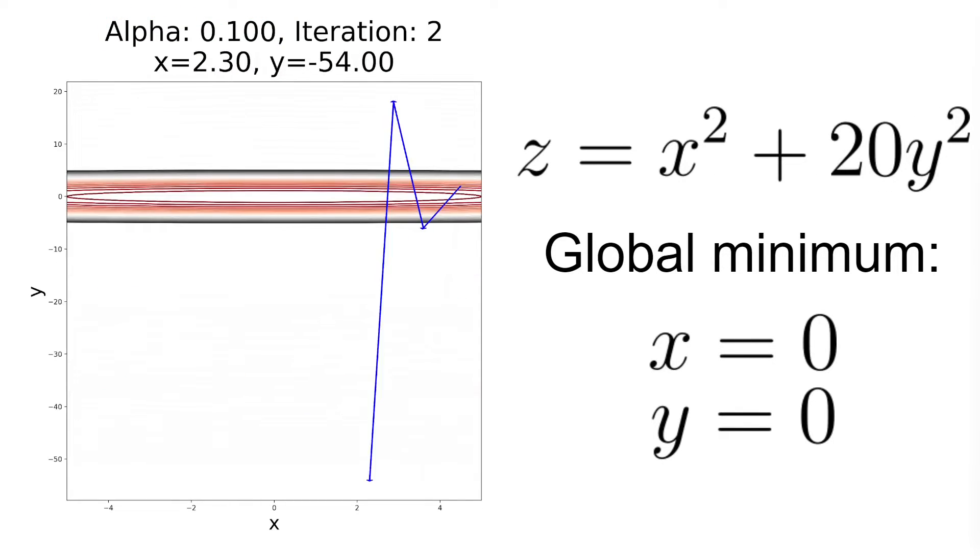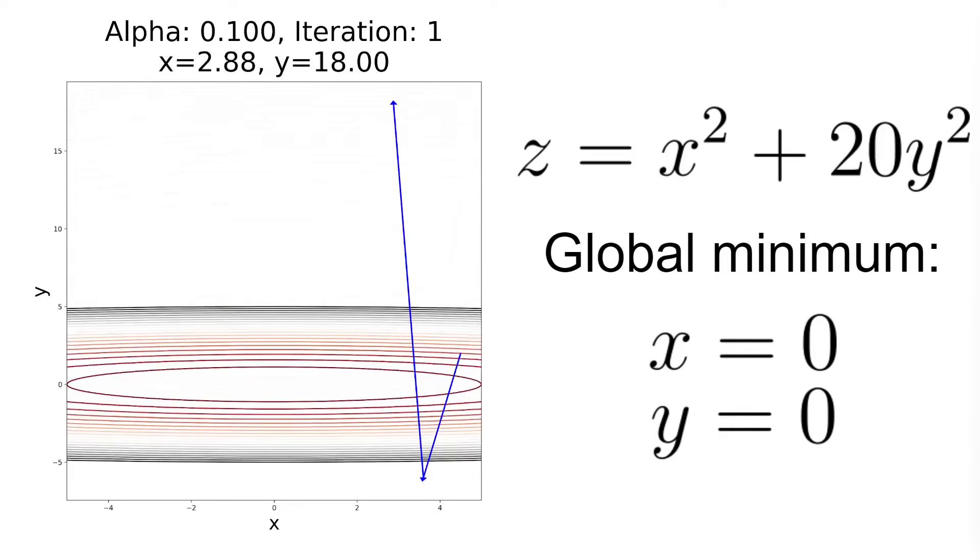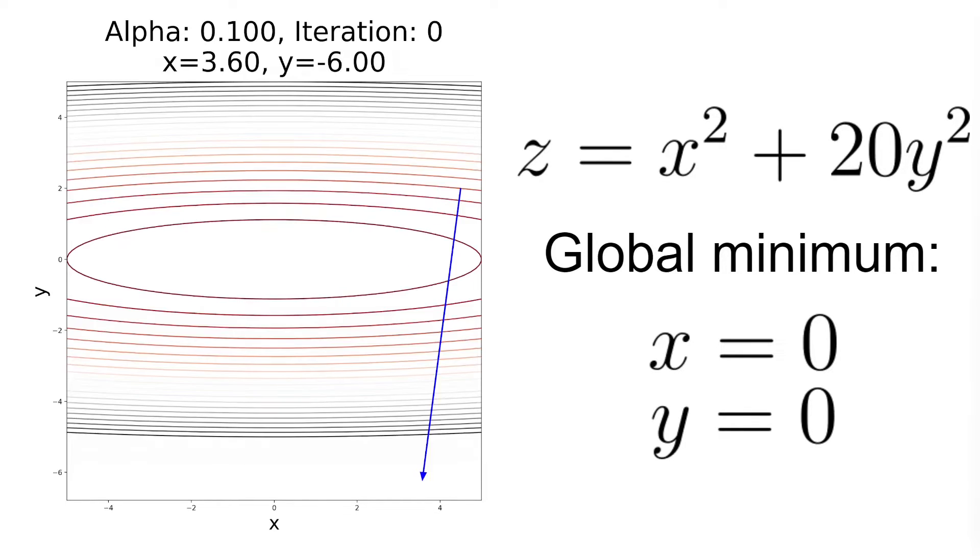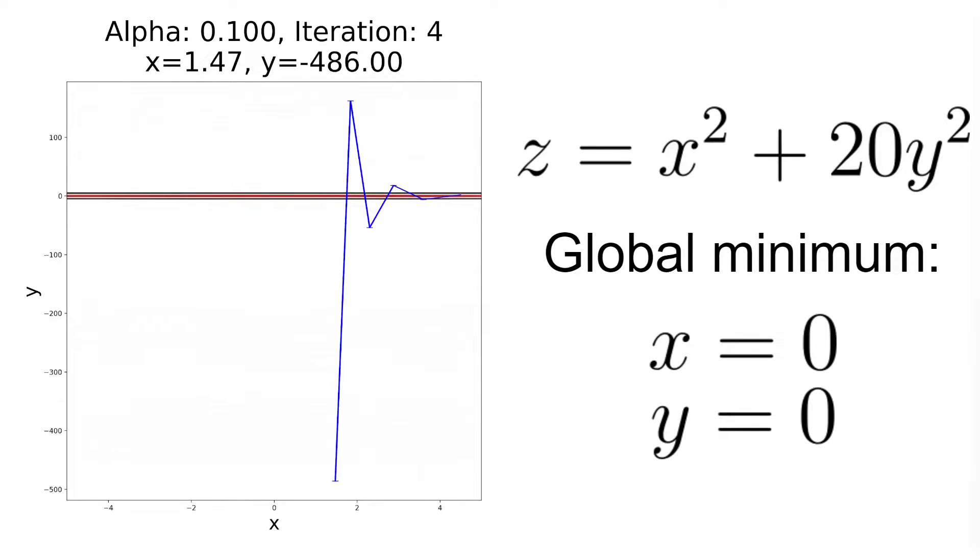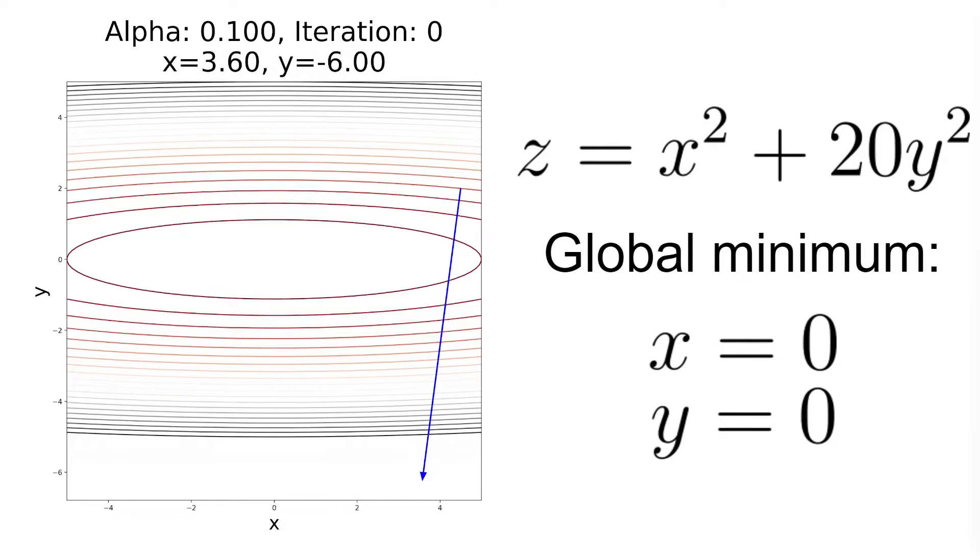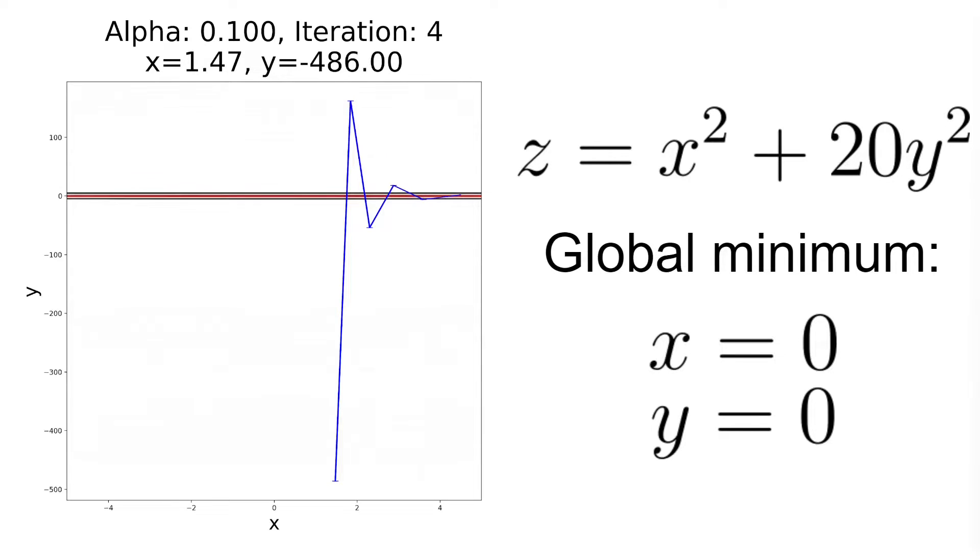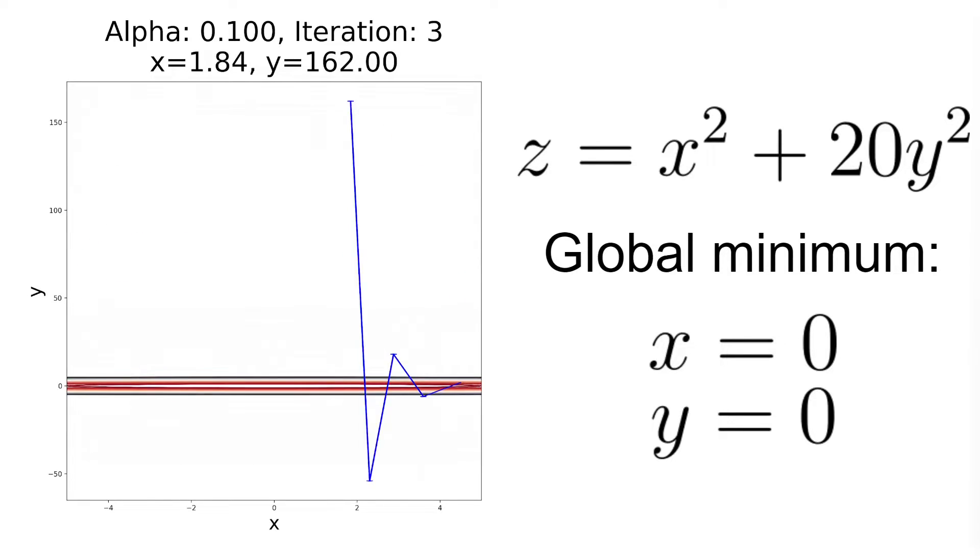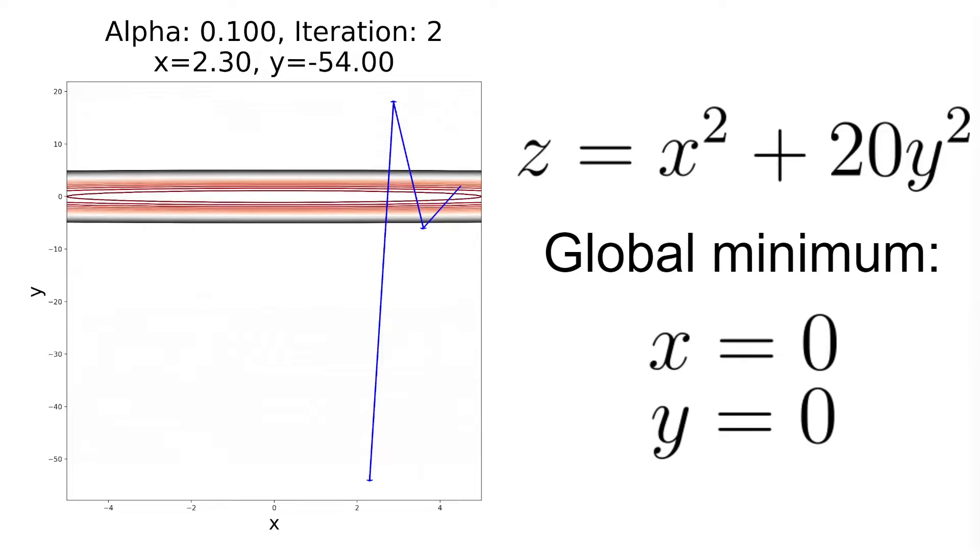So having said that, what would happen if we increase one of our coefficients and thus changing the scale of our features? Let's say that we increase the coefficient for the y variable. If we keep the same learning rate alpha, as you can see on the left image the gradient descent still converges on the x-axis but diverges on the y-axis.